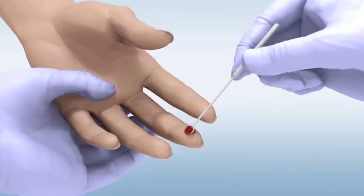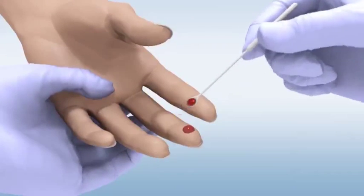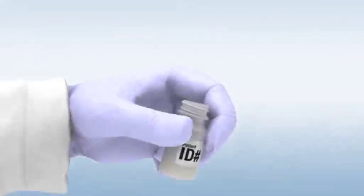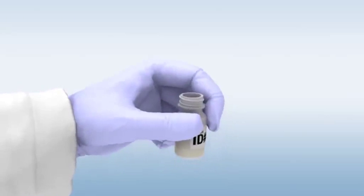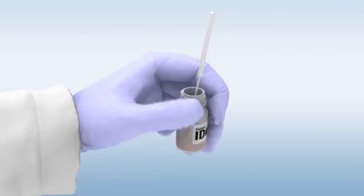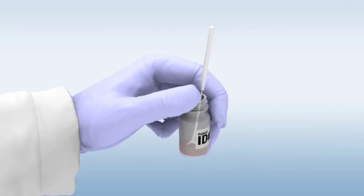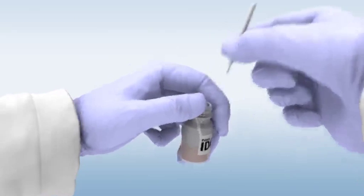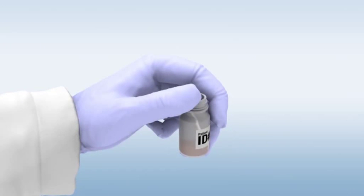Touch the sample loop to the drop of blood, allowing the opening of the loop to completely fill with blood. To transfer venous blood from a collection tube, use a 10 microliter lab pipette rather than the sample loop. Place the collected sample into the labeled black cap sample tainer. Ensure that the loop with the sample rests on the bottom of the bottle. Gently break the loop by applying pressure to the shaft at the brake notch. Discard the loop shaft into a waste container.